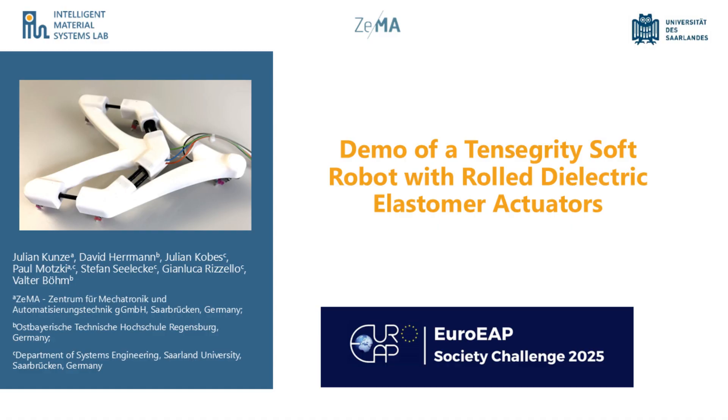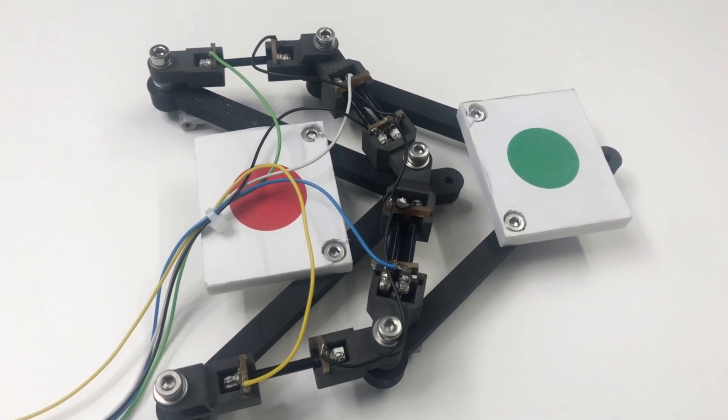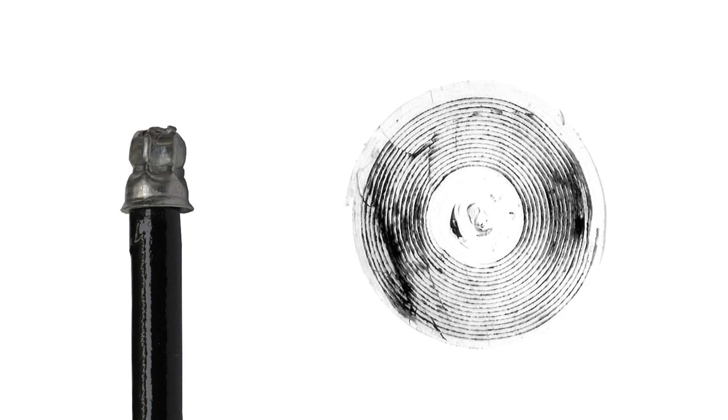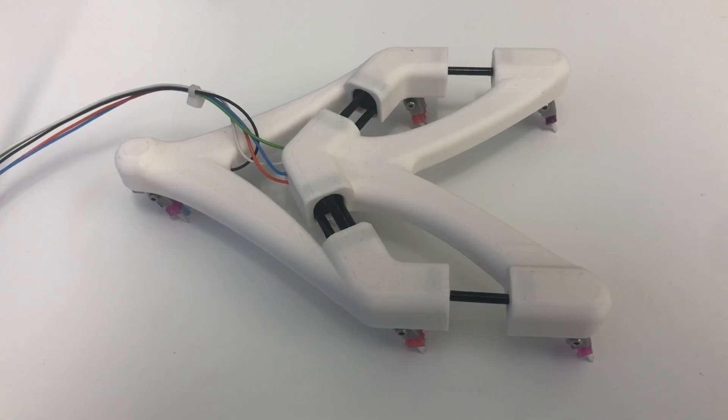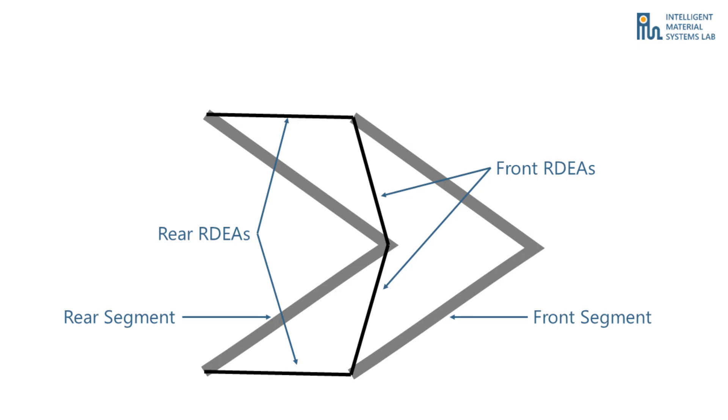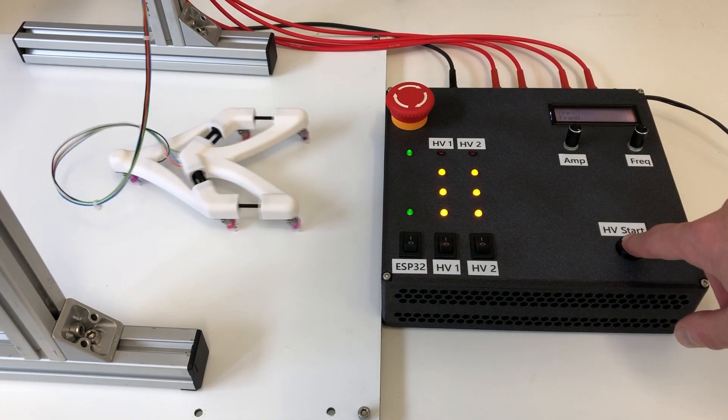What you just saw were two variants of our RDEA-driven tensegrity robot. First the experimental evaluation version, then the demonstrator. In both, rolled dielectric elastomer actuators are activated by an alternating voltage, causing oscillation between two rigid segments. In this video I show you how it works, and how we made it fast and reliable for the EuroEAP Challenge 2025.